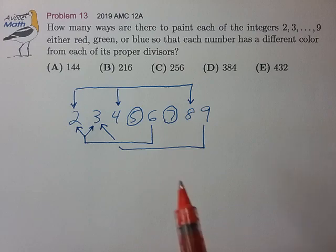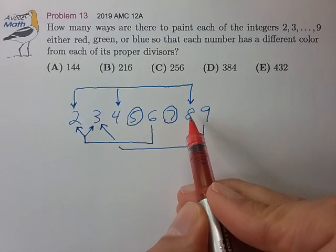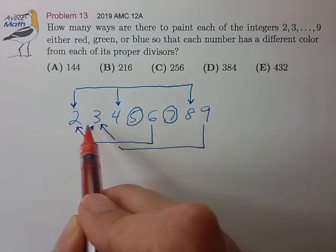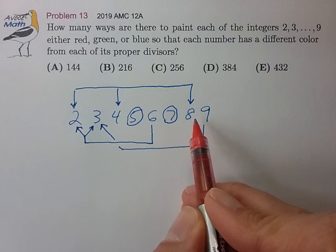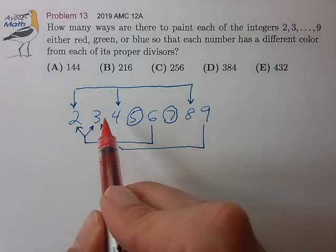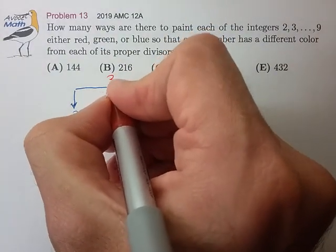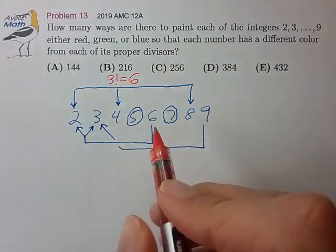I still like this grouping of 2, 4, and 8 to start our count because, again, that's a simple permutation of the three colors distributed among these three numbers, so there's 3 factorial, 6 ways to do that.